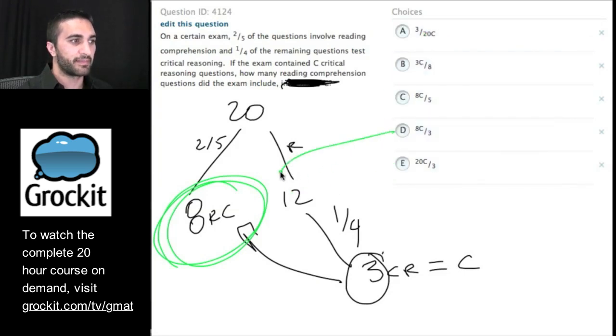So if I plug into these 3 for C, which one spits back out 8? This one you can see does, because if I put 3 in here, 8 times 3 over 3, these two cancel, and I'm left with 8.